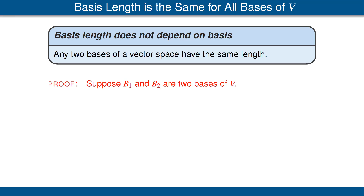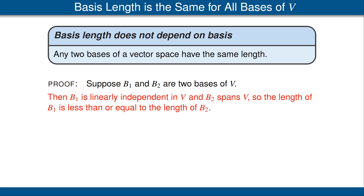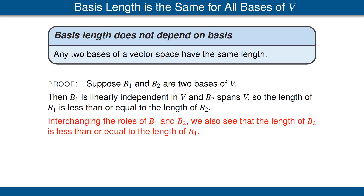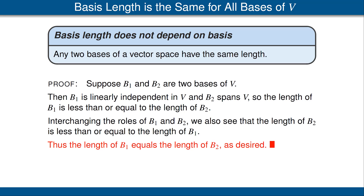Let's look at the proof of this theorem. Suppose we have a vector space V, and B1 and B2 are bases of V. This automatically implies that V is finite dimensional, because having a basis — a list that spans and is linearly independent — implies finite dimensional since lists are always finite. Because B1 is a basis of V, it is linearly independent in V. And because B2 is a basis of V, B2 spans V. We have a theorem saying the length of every linearly independent list is less than or equal to the length of every spanning list. Thus, the length of B1 is less than or equal to the length of B2. Interchanging the roles of B1 and B2, we conclude the length of B2 is less than or equal to the length of B1. Conclusion: the length of B1 equals the length of B2. Any two bases have the same length.